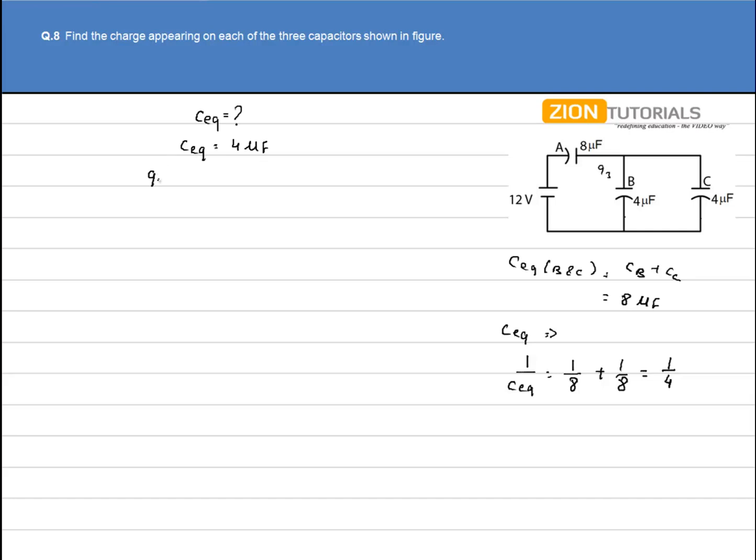Now the Q net can be calculated by Q equals C equivalent into V. We have value of C equivalent as 4μF and voltage is 12V which comes out to be 48μC.